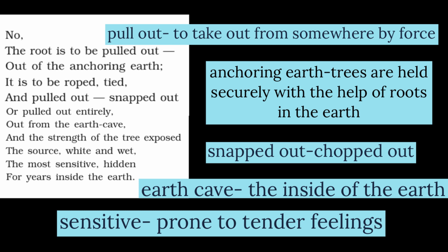In this stanza the poet says that to kill the tree it must be uprooted — its roots pulled out from the earth that supports it. The roots bind the tree to the soil and the most sensitive, hidden part — the roots — must be detached. The roots are white in color and damp. This is the actual start of the tree's death, as its life source, the roots, are exposed.